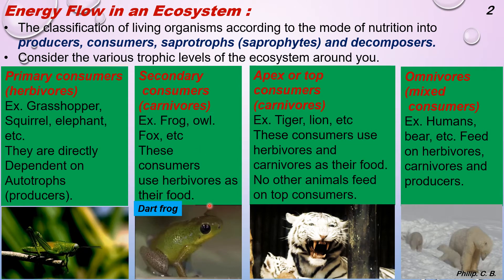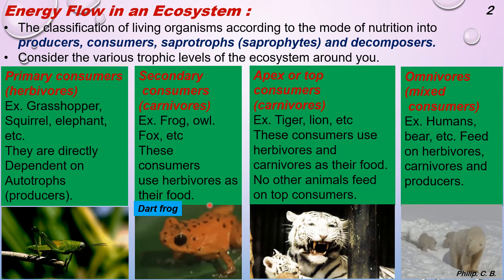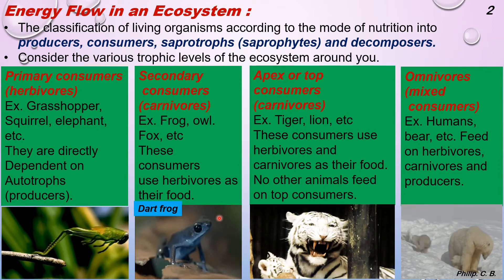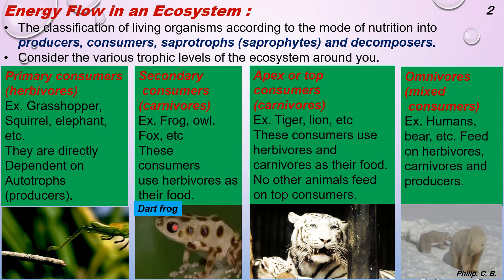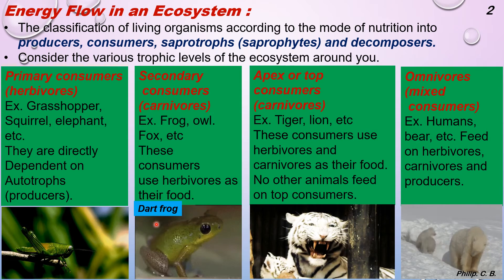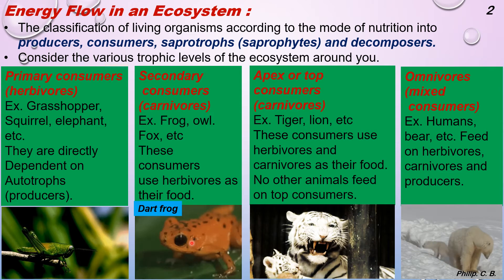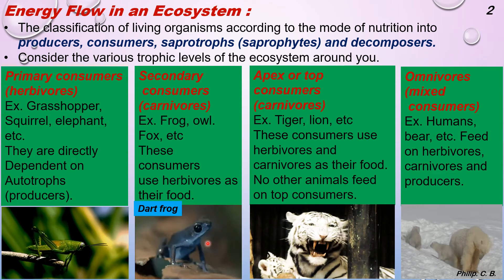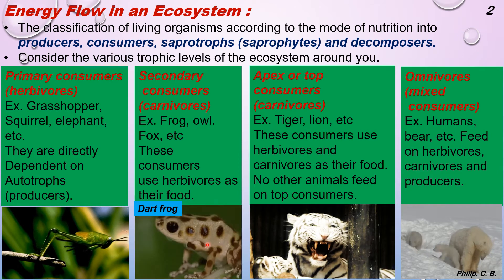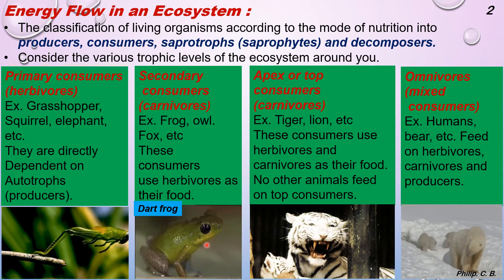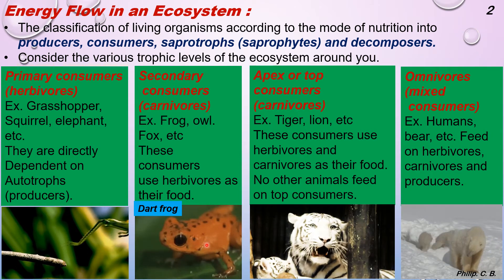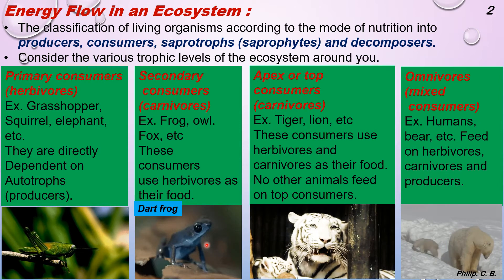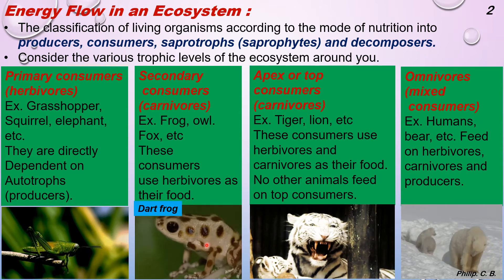The image shown here is of a frog species. For your additional information, dart frogs are more bright and shiny in color because these types of frogs are usually poisonous. That is one way you can identify poisonous and non-poisonous frogs.